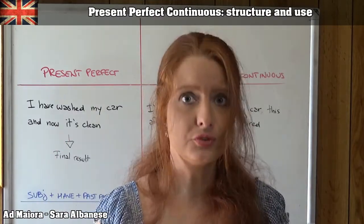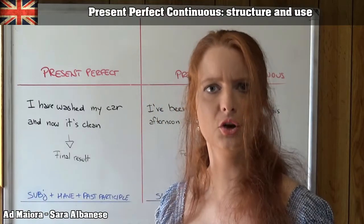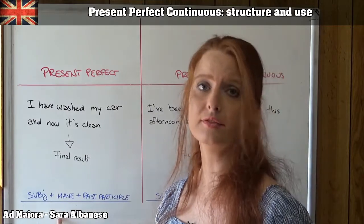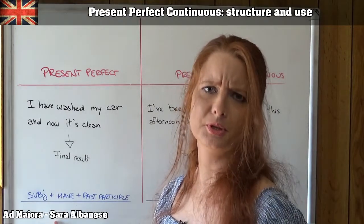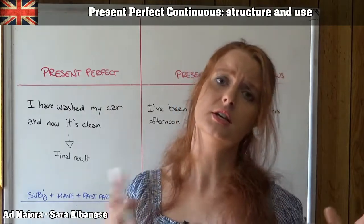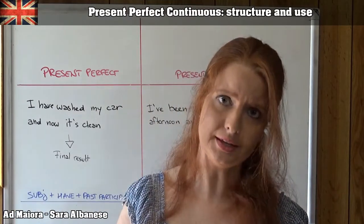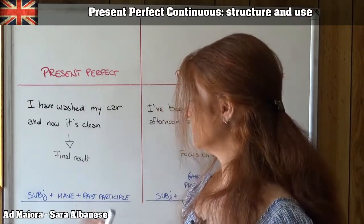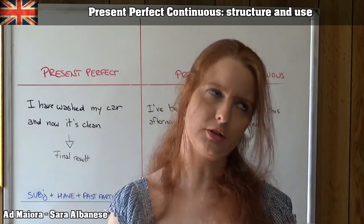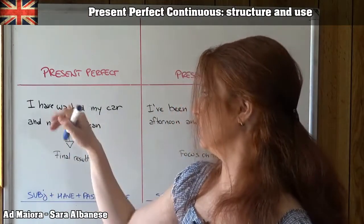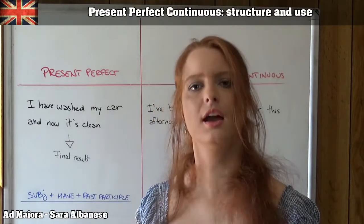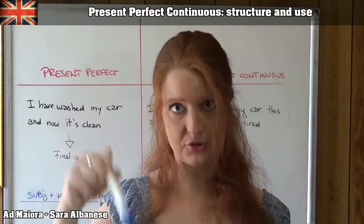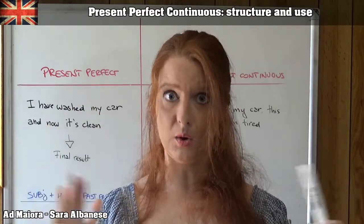Just one more thing — how do we form them? We already know how to form the present perfect: the auxiliary verb 'to have' and the past participle. Pay attention, Italian and German speakers — in English it's always 'have', not 'to be'. The past participle for regular verbs is just the base form plus -ed. For irregular verbs, it's the third column — the third form from our table of irregular verbs.